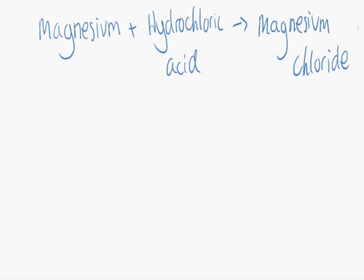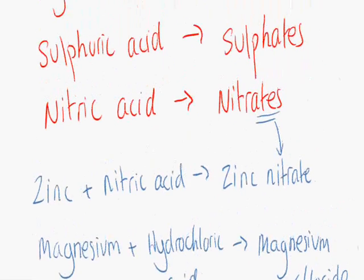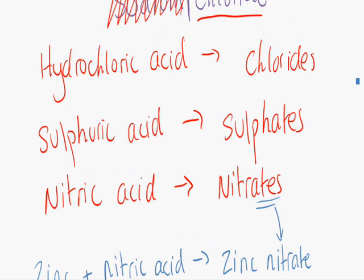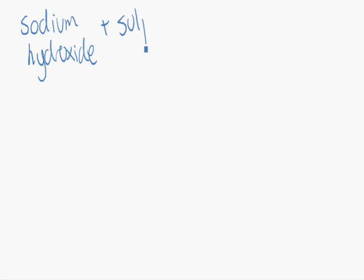Let's see if you can do one more. Let's say sodium hydroxide reacts with sulphuric acid. What salt do you reckon it will make? That's right, sodium sulphate.